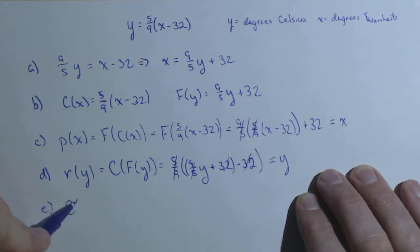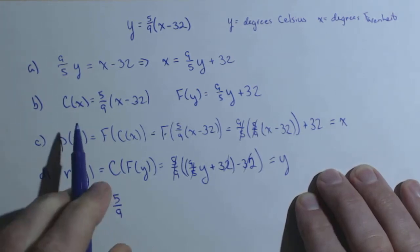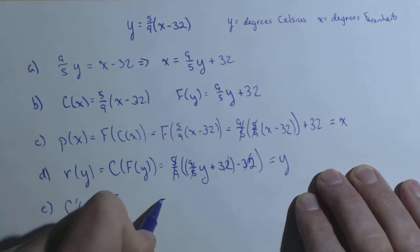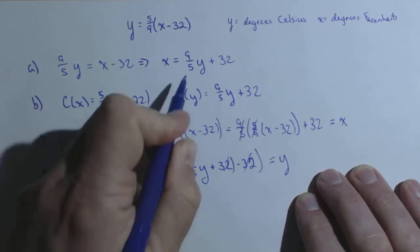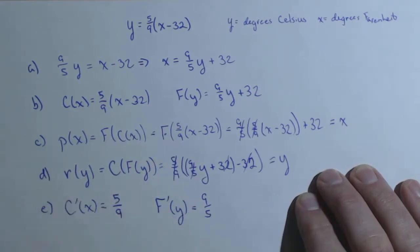Now let's say we wanted to find c prime of x. Well, that's going to be 5 ninths. It's a linear function with a slope of 5 ninths. f prime of y equals, same thing, 9 fifths.